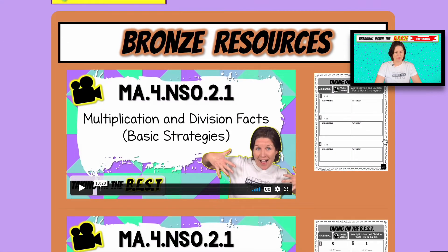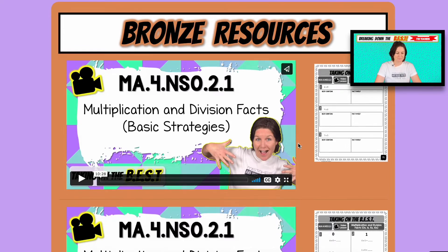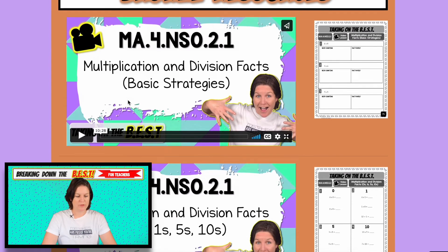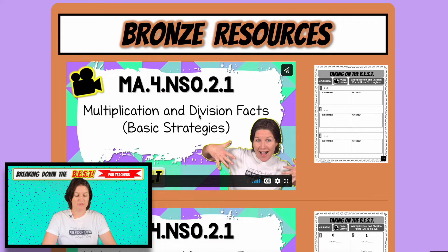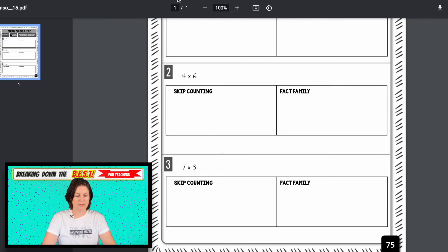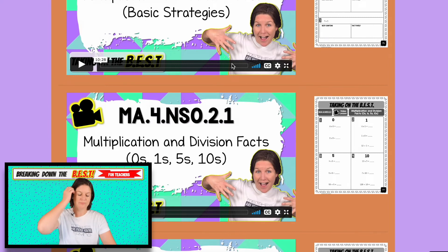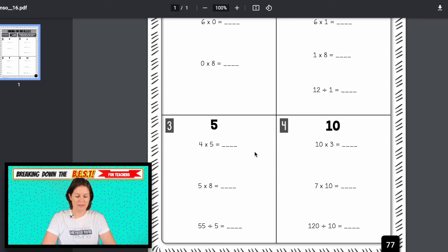Some districts are using this standard to kick off the year, which is pretty cool. A lot of times we start the year with place value, but this would be a nice way to kick off the year with this one. For the bronze resource, you have four videos that you can use, and you also have printable guides to go with them. The first video covers multiplication and division facts — basic strategies — just a reminder of how to use skip counting or fact families. The next video focuses on zeros, ones, fives, and tens, giving hints and ways to remember those.